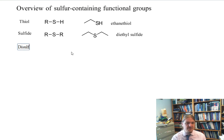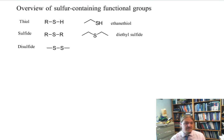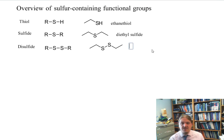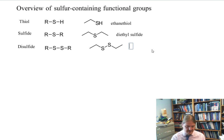Another important functional group is the disulfide functional group. This is a functional group with two sulfur atoms singly bonded together — the sulfur analog of the peroxide. Disulfide functional groups are important in biology in terms of disulfide bridges holding proteins together. I'll show a little bit more about that in an upcoming video on disulfides. And here is an example of a disulfide: diethyl disulfide.